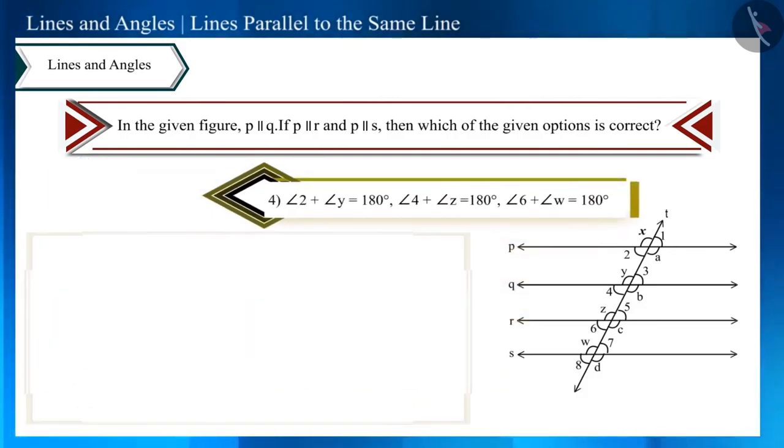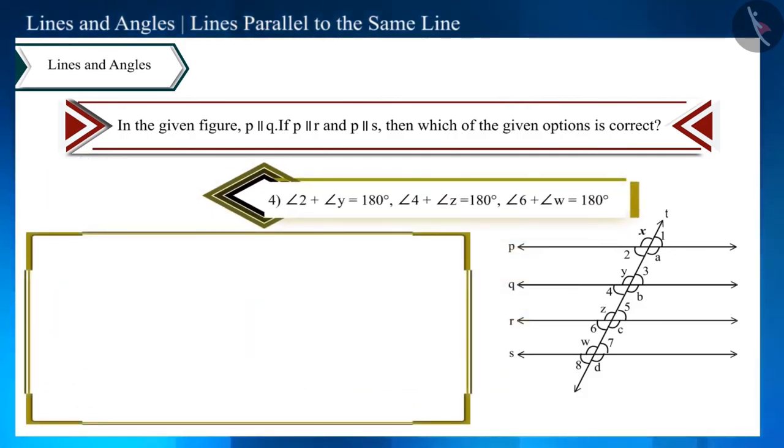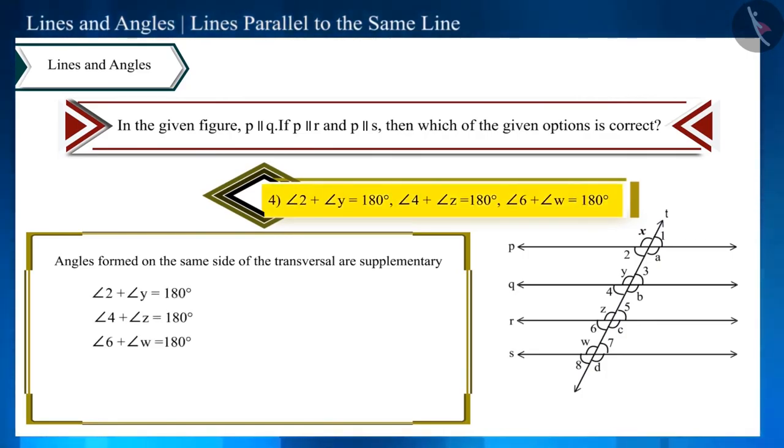Now look at the fourth and the last option. Here it is given that the sum of these angles is 180 degrees. By looking at the figure, we can see that these angles are interior angles formed on the same side of the transversal. We have learned that the sum of these angles is 180 degrees. Therefore, this option is also correct.